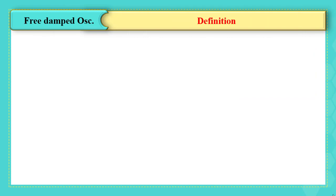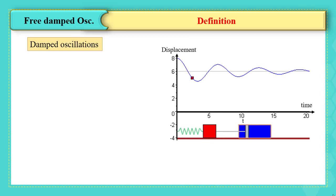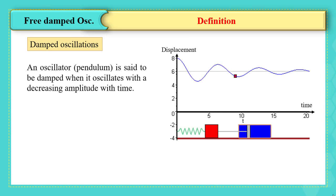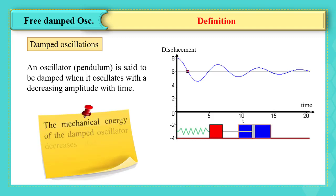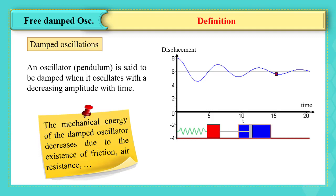What is free damped oscillation? An oscillator, like the pendulum, is said to be damped when it oscillates with a decreasing amplitude with time. The mechanical energy of the damped oscillator decreases due to the existence of friction, resistance, etc.